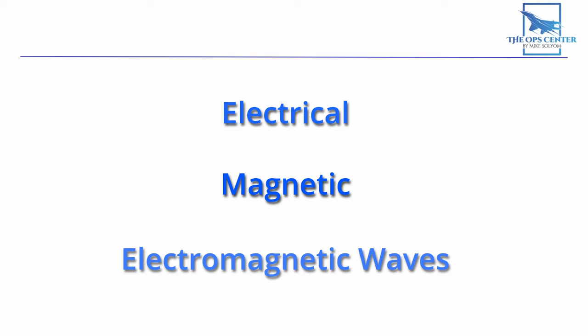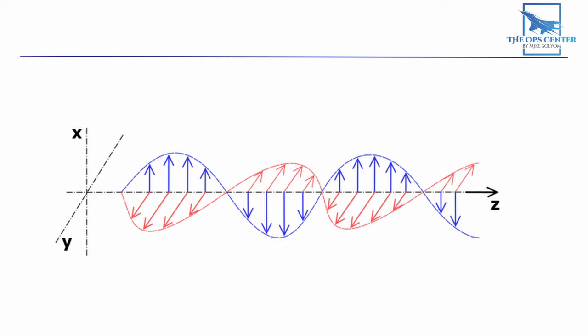All radar waves have an electrical component and a magnetic component, which is why they're also called electromagnetic waves. You'll always find these fields at 90 degrees to each other. And the direction the electrical field faces is called its polarization.